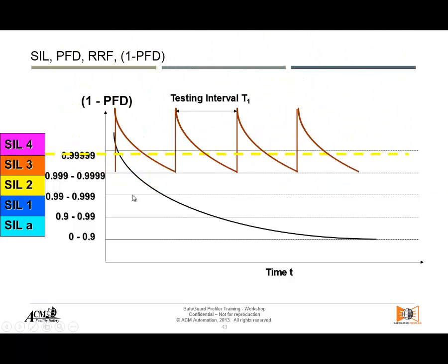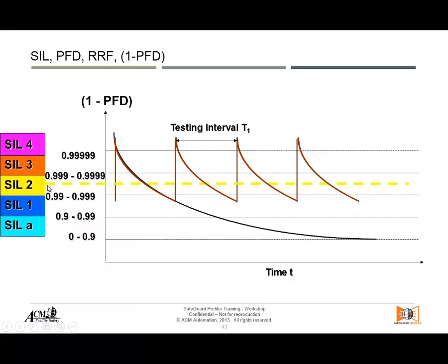If I proof test less often, then my probability of failure on-demand average goes to a SIL 2, for example. So it was a SIL 3, now a SIL 2. Sometimes end users, when you ask them how often they have tested their equipment, say: we've never done a proof test. That means if you thought you had a very highly reliable, low probability of failure on demand equivalent to SIL 3, well, today, if you never tested it, the probability of that equipment failing is very high.